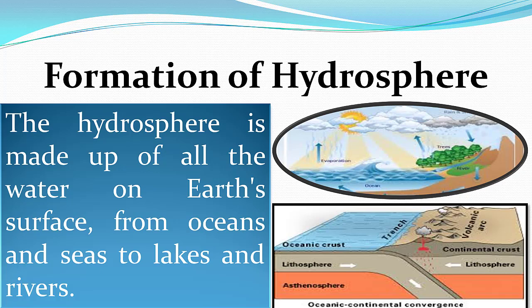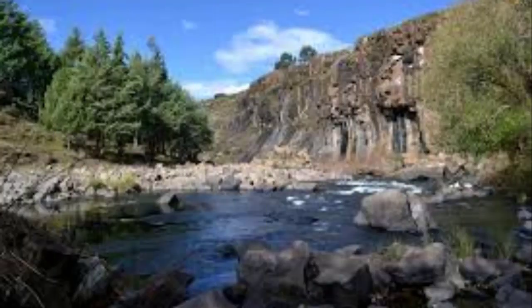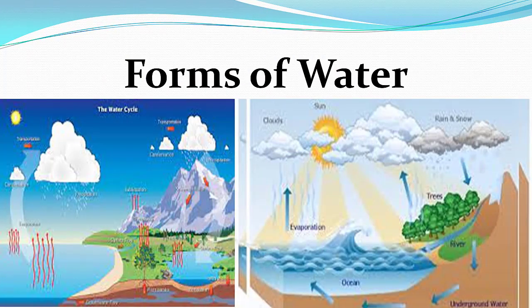The hydrosphere is made up of all the water on Earth's surface, from oceans and seas to lakes and rivers. Earth's water came from the rocks that formed the Earth and from the comets and asteroids that hit the Earth. This water then dissolved minerals to form salt water seas.